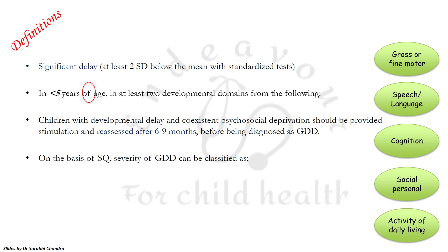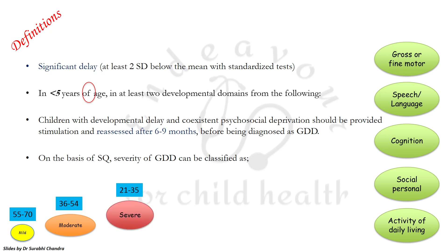Based on social quotient, as per the Indian Academy of Paediatrics, the severity of global developmental delay is classified as: mild when SQ is between 55-70, moderate when between 36-54, severe when between 21-35, and profound when SQ is less than 20. The term 'global' is used only when developmental delay is present in at least two domains.